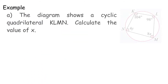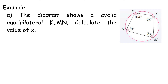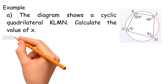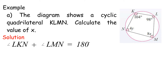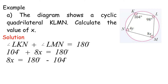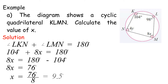Example A: The diagram shows a cyclic quadrilateral KLMN. Calculate the value of X. Angle LKN plus Angle LMN equals 180 degrees. 104 degrees plus 8X equals 180 degrees. 8X equals 180 minus 104 degrees. 8X equals 76 degrees. X equals 76 degrees over 8, equals 9.5 degrees.